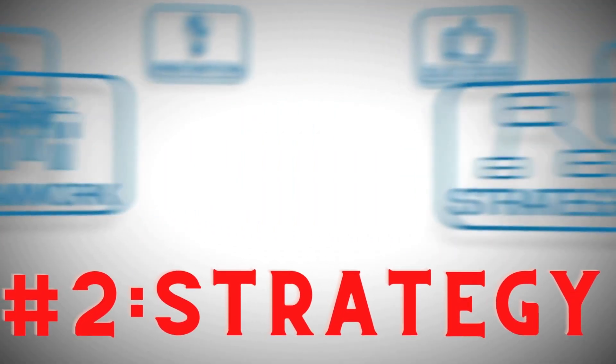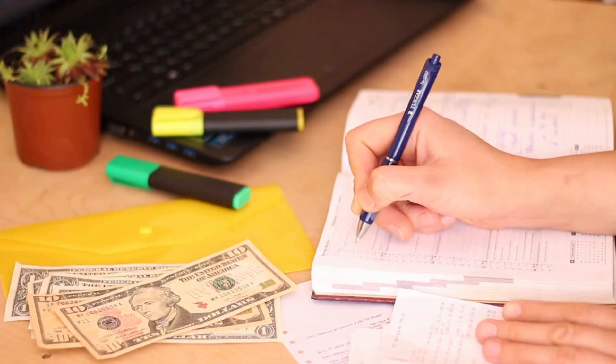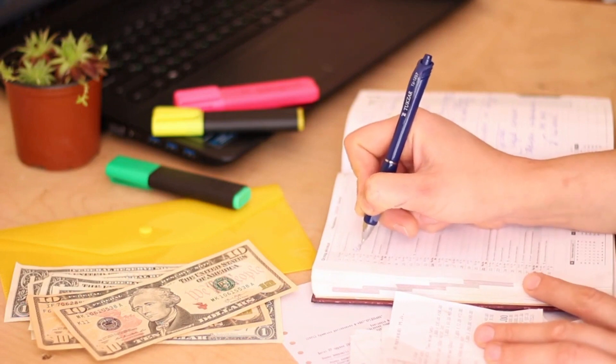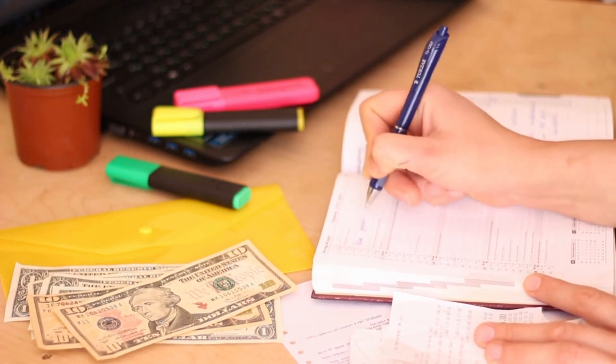Number two, develop a strategy. Decide what type of property you want to invest in and create a plan to achieve your goals. You must plan ahead. This is not something you must do without a strategy. So basically, you should use Google Excel Sheet,